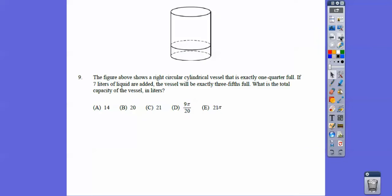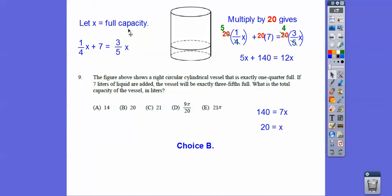In the figure above, a right circular cylinder vessel is exactly one-quarter full, so one-fourth full. If seven liters of liquid are added, the vessel will be exactly three-fifths full, so what's the total capacity? I'll let X be the total capacity right there. So right here, this is one-fourth of X, so one-fourth of X when we add those seven liters is going to give us three-fifths of X. And then over here, I multiplied everything by the common denominator between five and four, because you guys get all freaked out on the fractions, so get rid of them. Multiply the whole equation by the common denominator, 20. Four goes into 2, 5 times, 5X. Five goes into 2, 4 times. Four times three is 12X. And then we subtract 5X from both sides, we get 7X. X equals 20 right there.